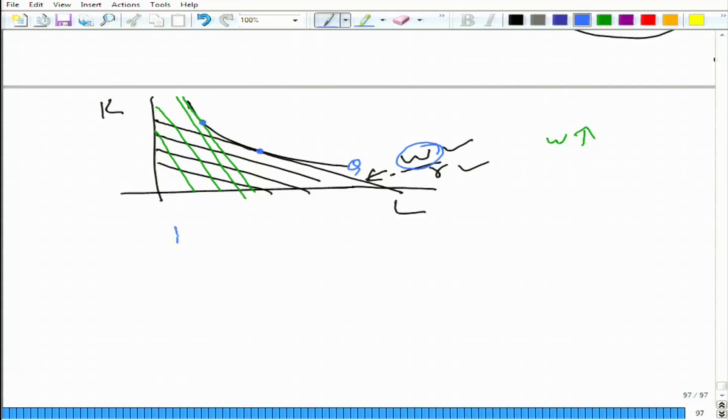So, when I say K as a function of R, W, Q, it gives us the conditional factor demand function. What do we mean? We mean that we are keeping Q fixed at Q naught and we are keeping W fixed at some level, let's say W naught, and we are basically varying K with respect to R. This is what we get as conditional factor demand function.